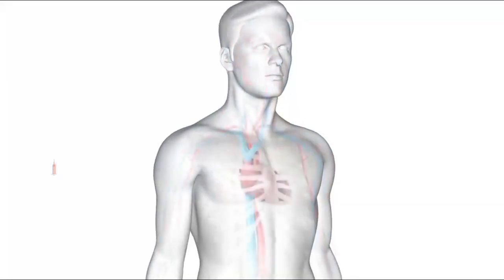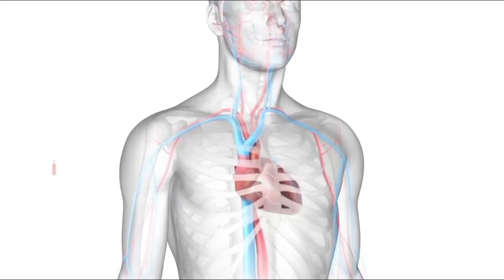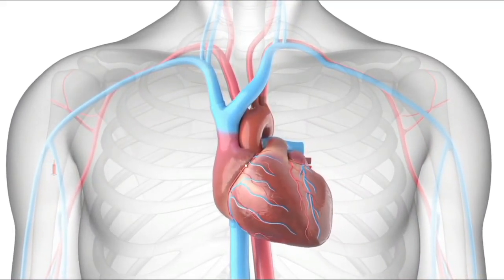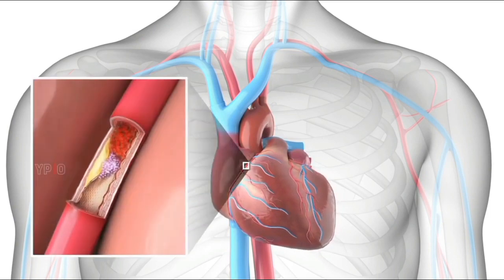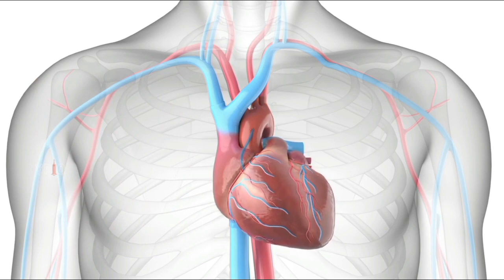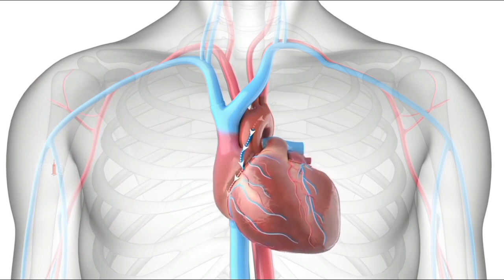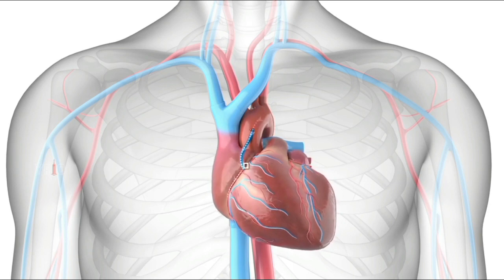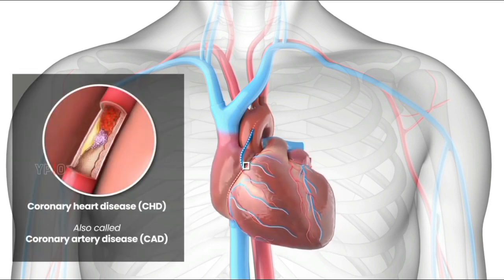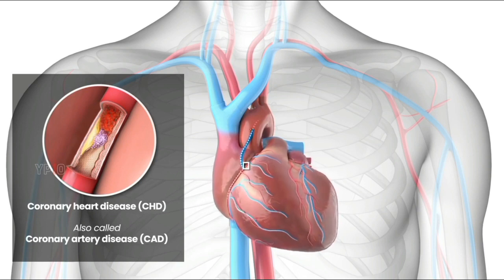Coronary artery bypass graft surgery, or CABG, is a procedure performed to treat blocked or narrowed arteries that supply oxygen-rich blood to the heart. This is accomplished by going around, or bypassing, the blocked artery to increase the blood flow to the heart.